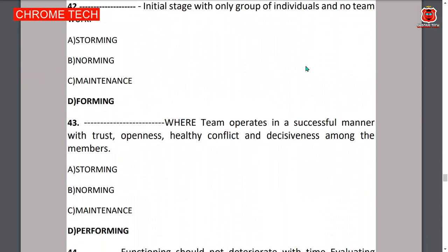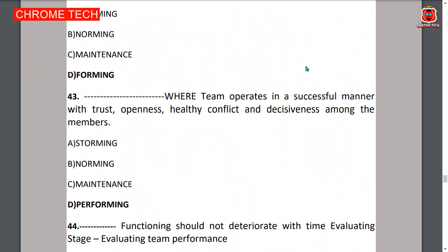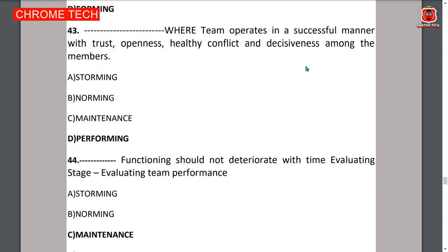Forty-third question: where a team operates in a successful manner with trust, openness, healthy conflict, and decisiveness among the members — the answer is performing. Option D — performing — is the correct answer.